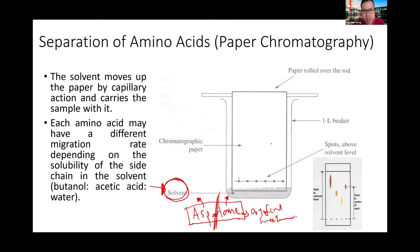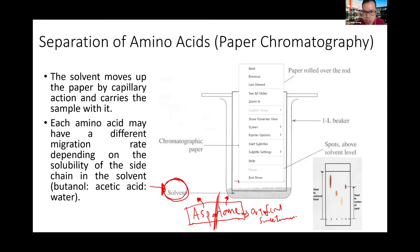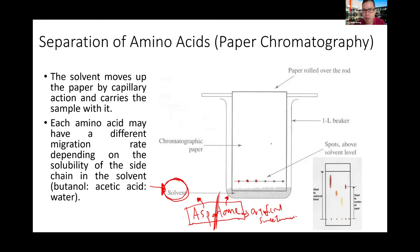Before placing the paper in the beaker, you use a capillary tube to take some amino acid solution and dab it onto the paper. Let it dry, then dab again repeatedly to increase the concentration of amino acid at that spot. Each amino acid goes in one specific area, about 0.5 to 1 centimeter apart.